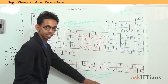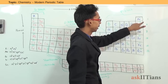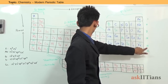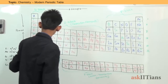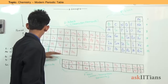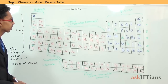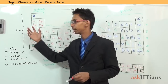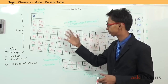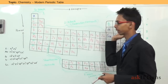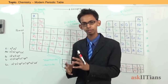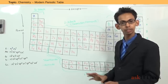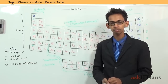There are 2 elements in the 1st period, 8 in the 2nd, 8 in the 3rd, 18 in the 4th, 18 in the 5th, 32 in the 6th period including the lanthanoids, and 32 in the 7th period including the actinoids. This was the overview of the periodic table. We will discuss the properties of S block, D block, and P block elements in different upcoming chapters. I hope these concepts are clear to you. Thank you.